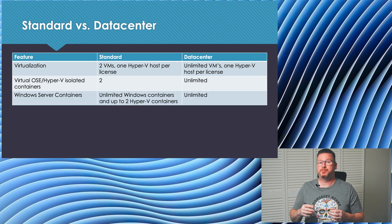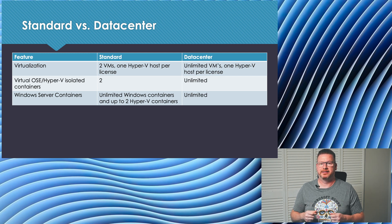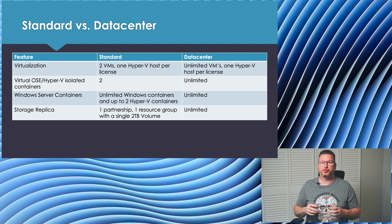For Windows Server containers, both are unlimited when run on Windows Server, but Standard is limited to two containers in Hyper-V. Storage replicas are limited to one partnership, one resource group, and up to two terabytes of storage with Standard.